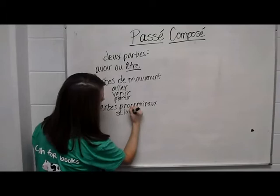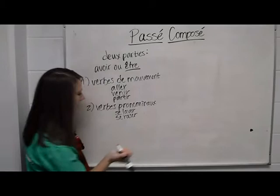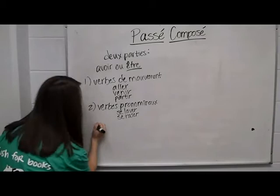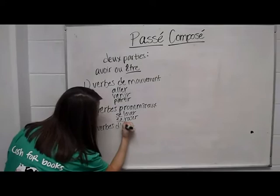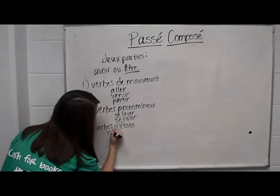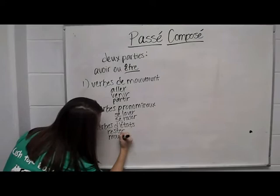These are verbs such as se laver or se raser. The third group of verbs that you use être with are going to be verbs of stay or being. These verbs include rester, mourir, or naître.